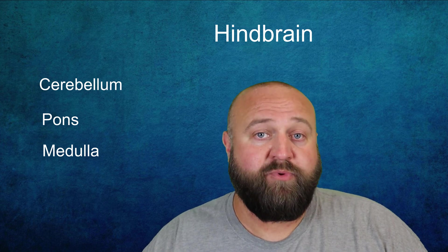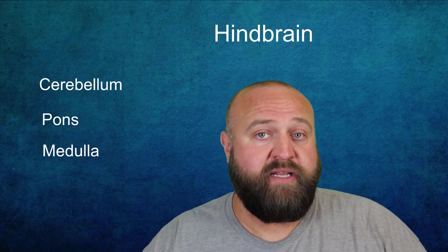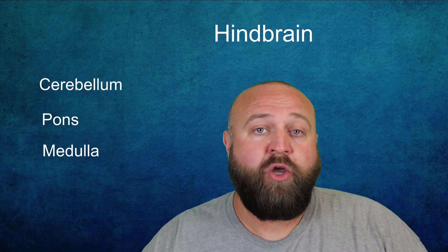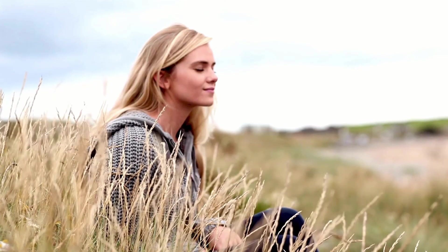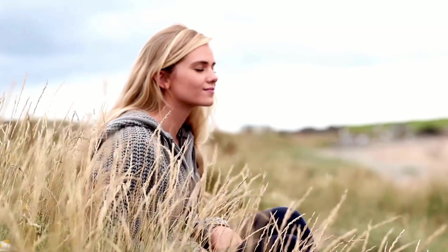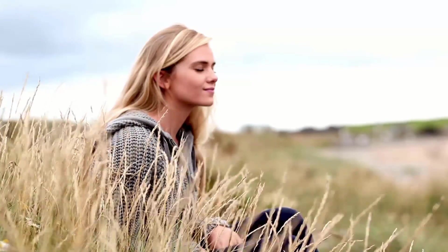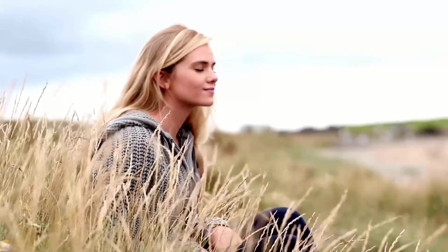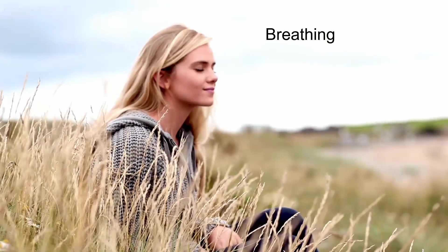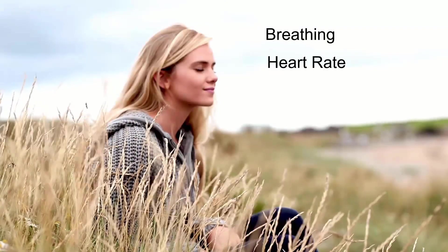Just below the pons, where the spinal cord meets the brain, is the medulla — which is the most important part of your brain. The medulla is responsible for critical, life-sustaining processing of the autonomic nervous system. Functions like breathing, heart rate, and blood pressure are regulated from the medulla. So if something happens to your medulla, you're pretty much unable to live.